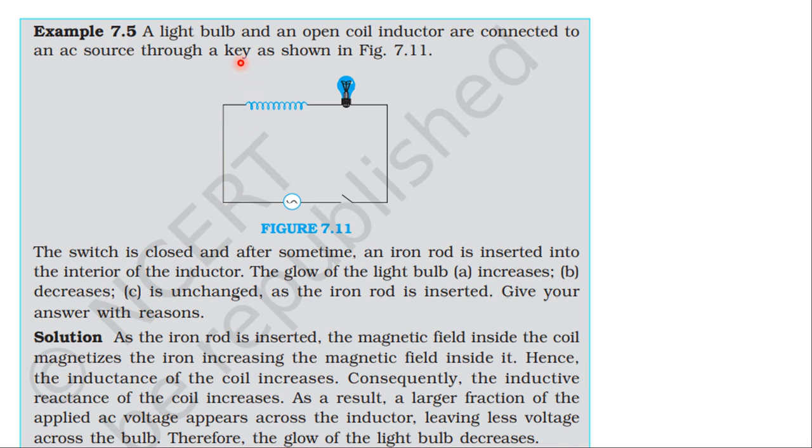From the topic of alternating current, Example 7.5: A light bulb and an open coil inductor are connected to an AC source through a key as shown. The switch is closed and after some time an iron rod is inserted into the interior of the inductor. Does the glow of the bulb increase, decrease, or remain unchanged as the rod is inserted?